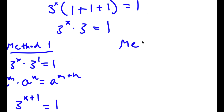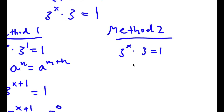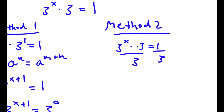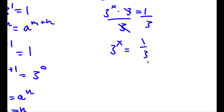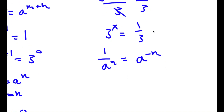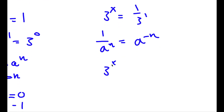For Method 2: I have 3^x times 3 equals 1. I'm going to divide both sides by 3, so now I have 3^x equals 1 over 3. Using the rule that 1 over a^n equals a^(-n), I have 1 over 3 to the power of 1, which is the same as 3 to the power of negative 1.